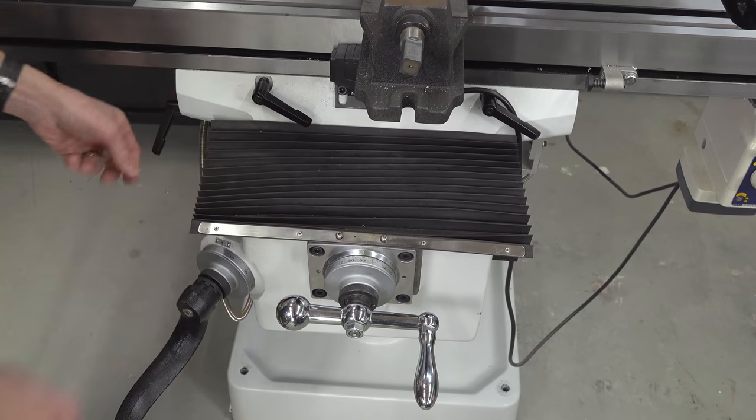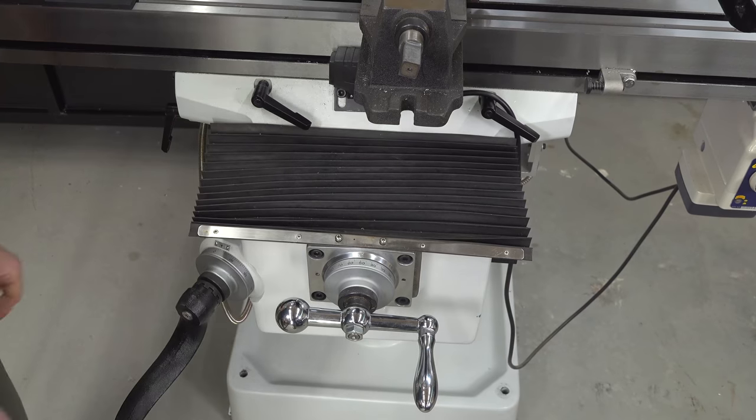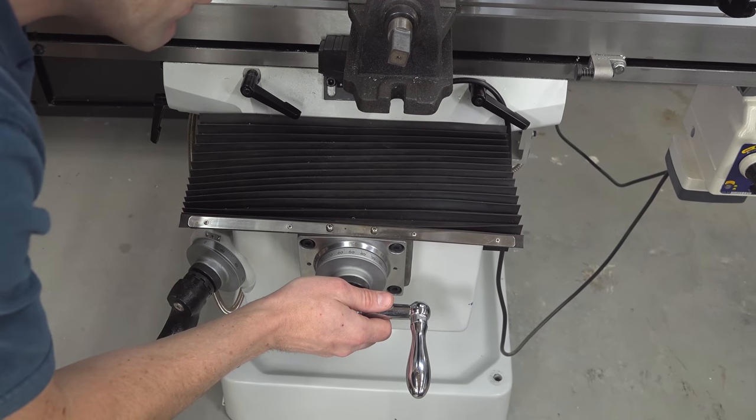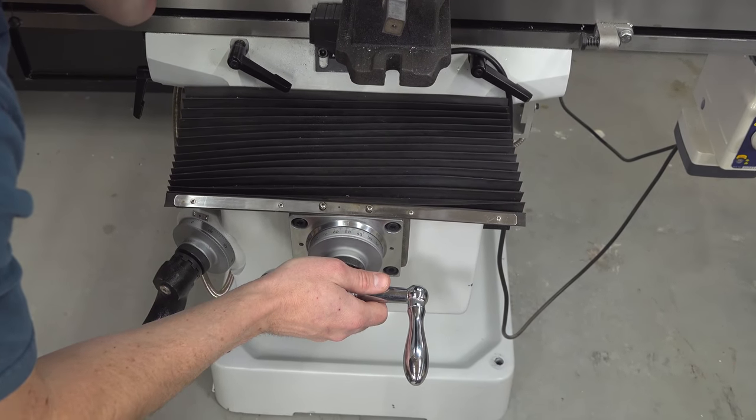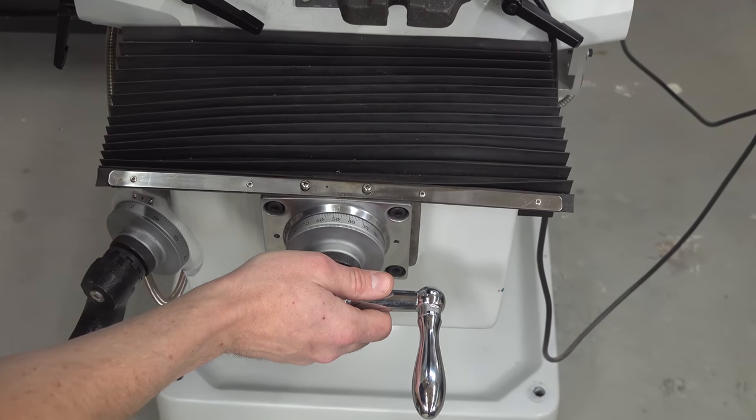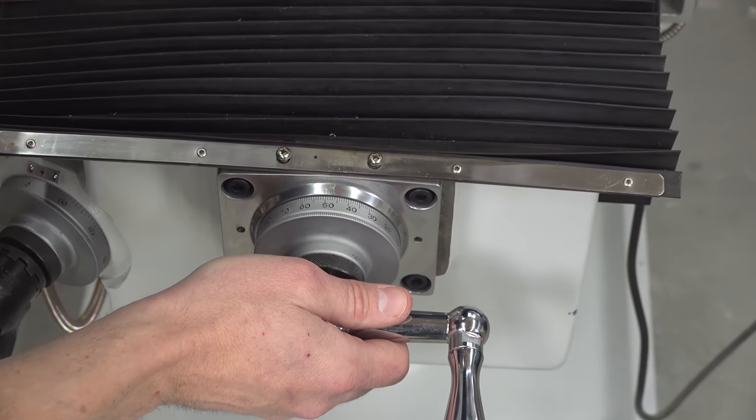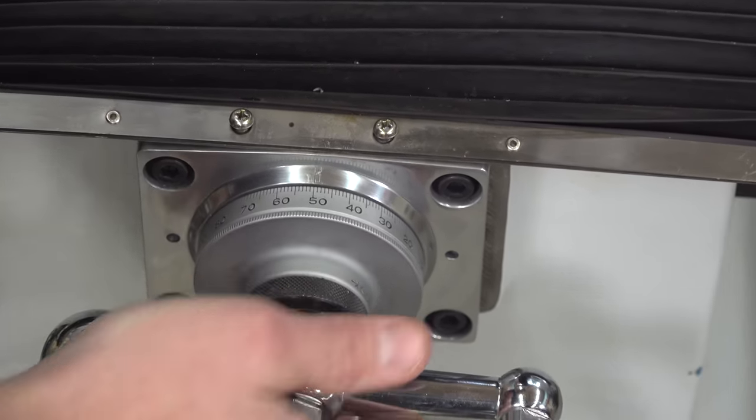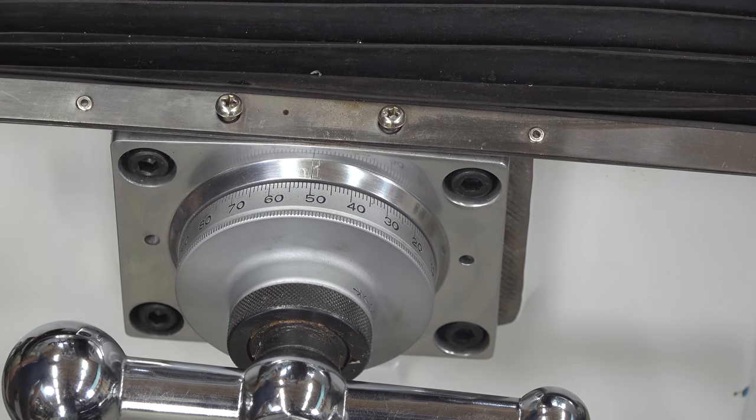Let's look at the Y axis. For the Y axis, we're going to do the same thing. We're just going to lock down the Y axis lock and then very gently move the handle. That's about two thousandths of an inch. That's good, if not just a little bit on the tight side.